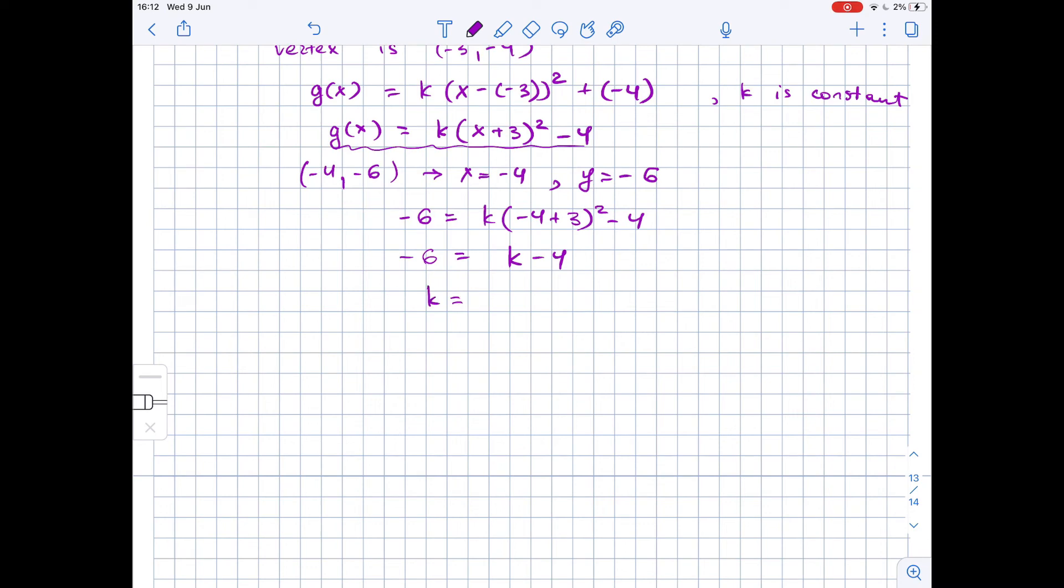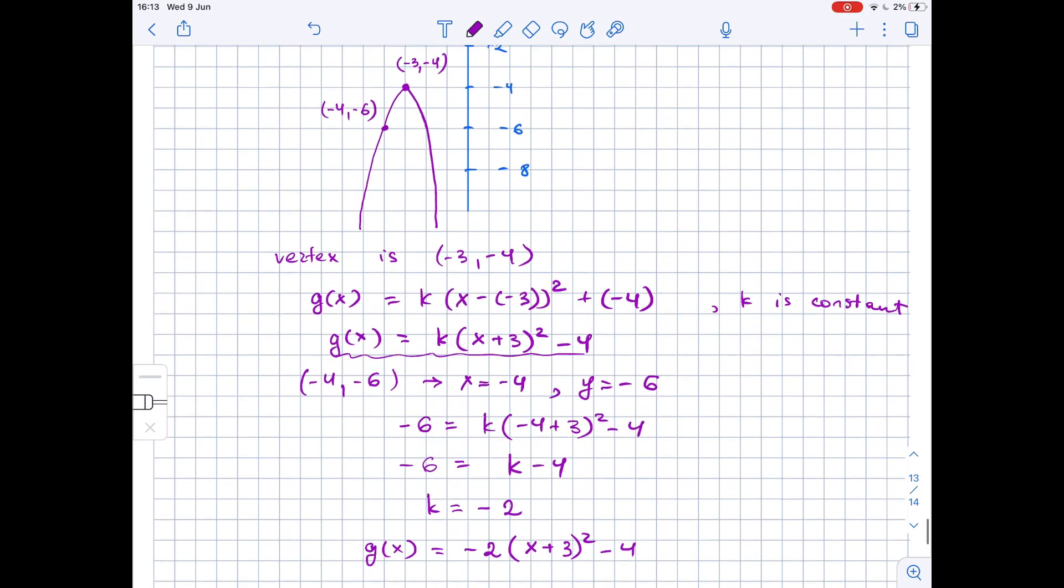So we get that our equation g(x) is equal to -2 times (x + 3) squared minus 4, and this is our answer.